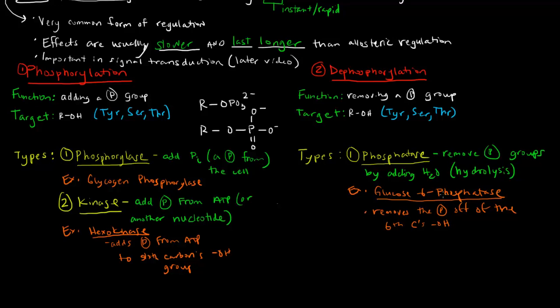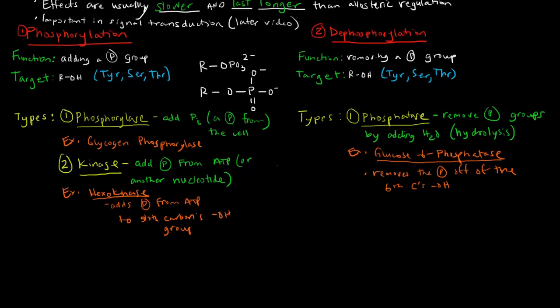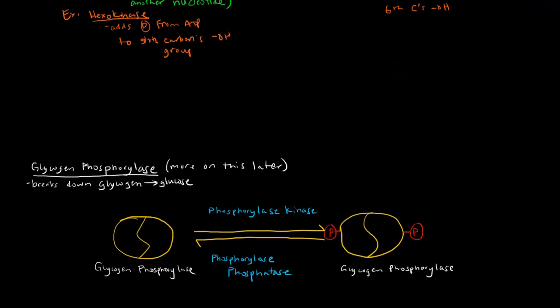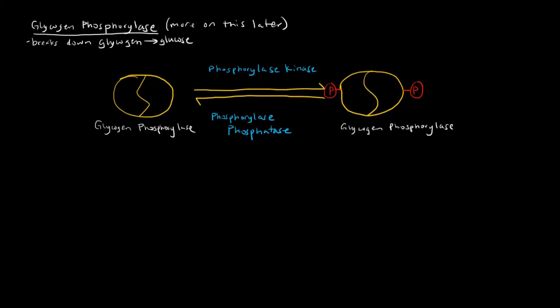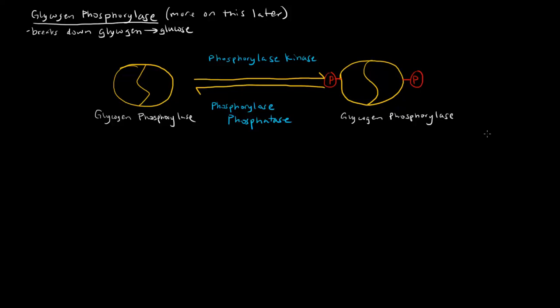So let's talk about the example of glycogen phosphorylase and how kinases and phosphatases come into play. Glycogen phosphorylase is an enzyme that catalyzes the breakdown of glycogen into glucose. We can imagine this enzyme in its inactive form — we'll call it glycogen phosphorylase B — which is inactive, or at least less active, kind of like in a T state.